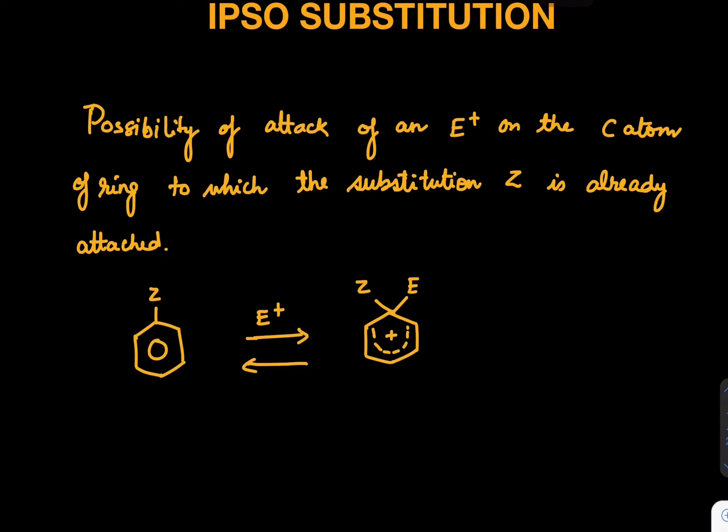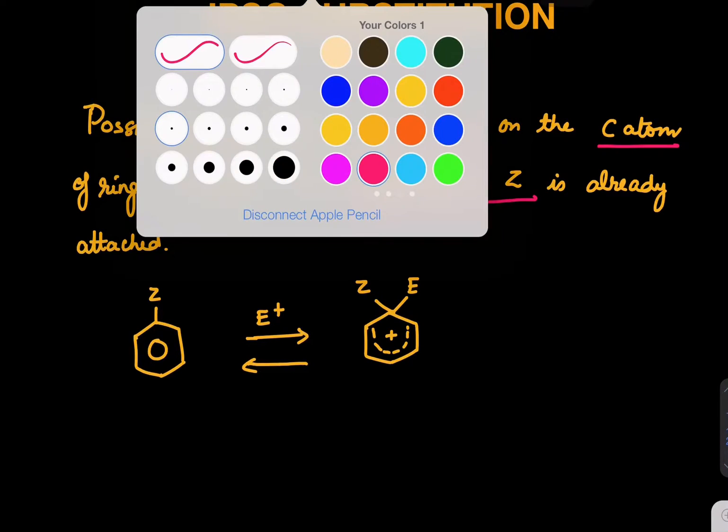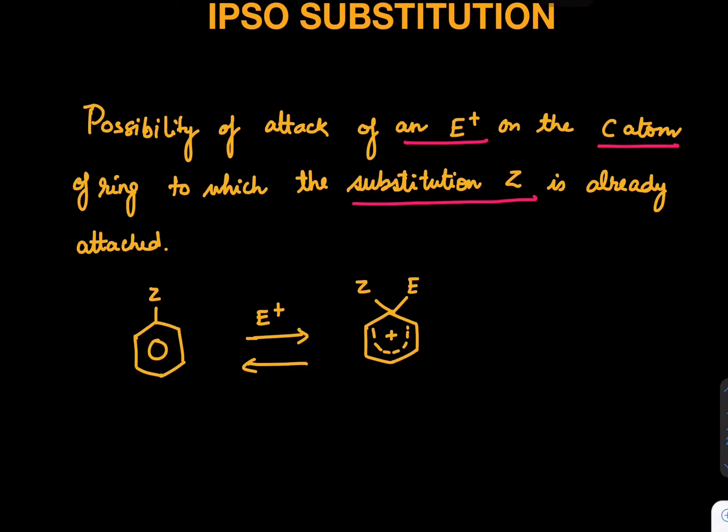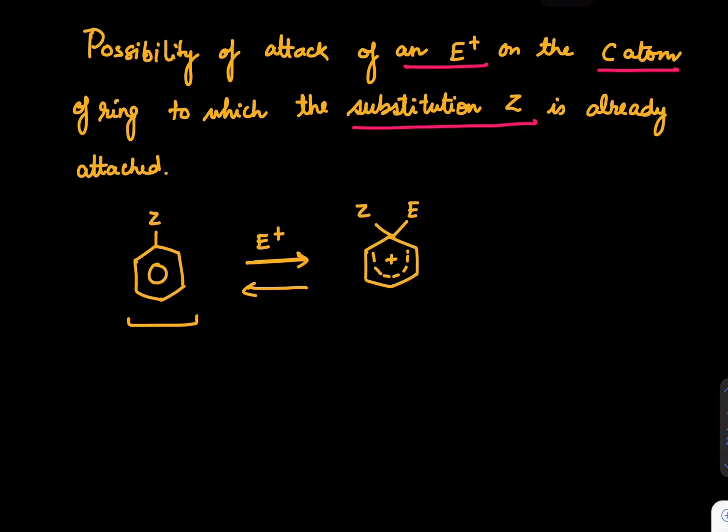So let's read the definition first. Possibility of attack of an electrophile on the carbon atom of the ring to which the substitution Z is already attached. What is the meaning of this? If you see the structure, already there is a Z attached here, and now you're bringing an electrophile which is joining at the same position where Z is there. So we have this kind of intermediate which is formed.